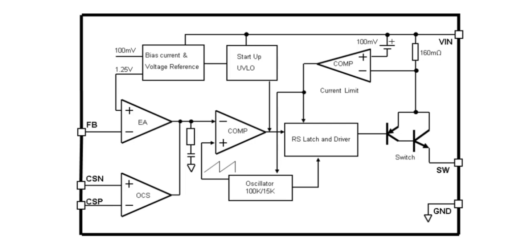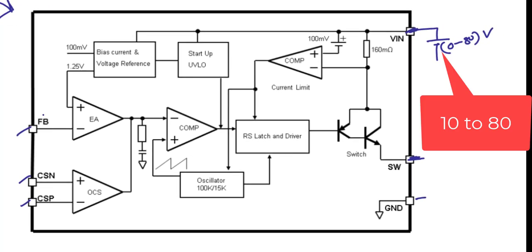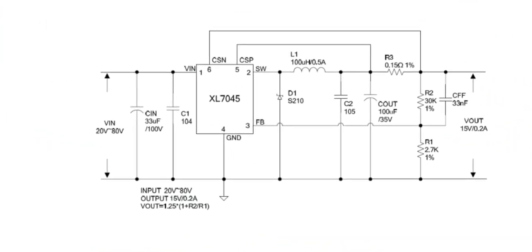The XL7045 is an 8-pin IC and you can see its internal circuit here. Vin is the input voltage — you can give from 0 to 80 volts (up to 85 volts per the datasheet). The switch connects to an inductor and capacitor. In the typical real-time circuit, you give input voltage from 20 to 80 volts. Between pins 1 and 4, two capacitors are used: one is 33 µF 100V and one is a 104 (0.1 µF) capacitor.